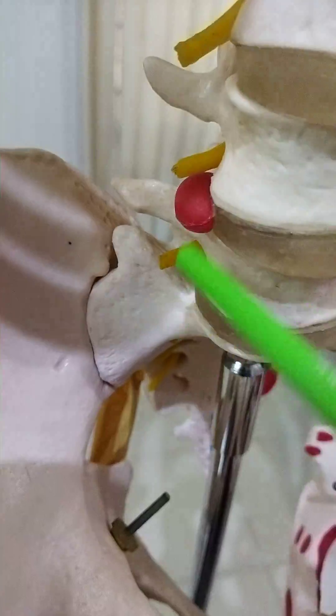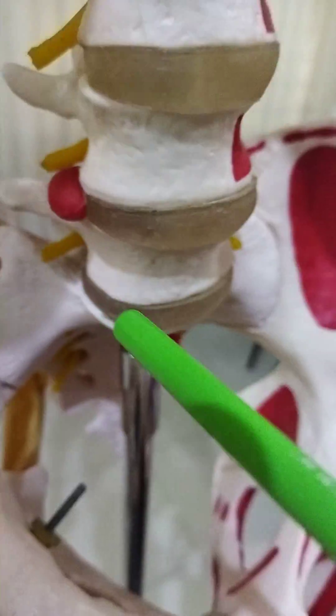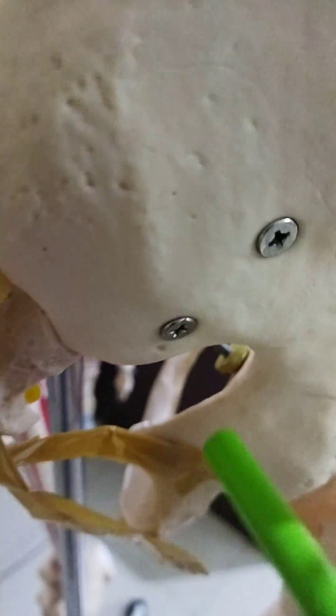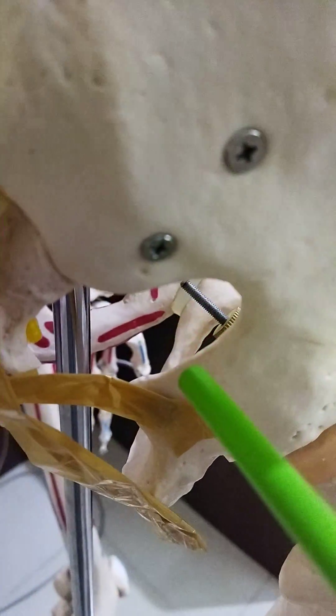This is the location of the lumbosacral plexus. The pudendal nerve is from this lumbosacral plexus. This is the greater sciatic foramen and this is the lesser sciatic foramen. The pudendal nerve leaves the pelvic cavity through the greater sciatic foramen.